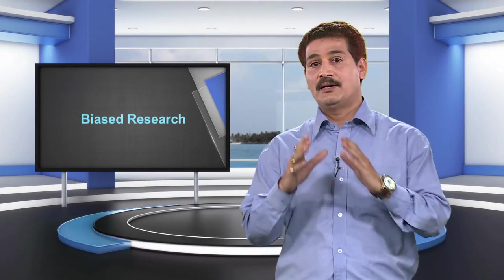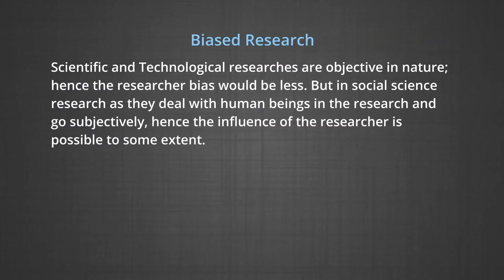Next is biased research. Any research should never be biased. Research bias is making some alterations or changing the findings to satisfy certain predictions or interest groups. Scientific and technological researches are objective in nature, hence researcher bias would be less. But in social science research, as they deal with human beings and go subjectively, the inference of the researcher is possible to some extent. The investigator should attempt by all means to minimize bias.